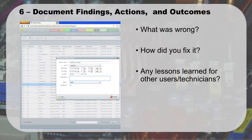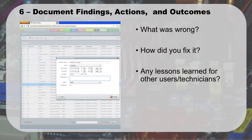The sixth and last step — and probably one of the most important, even though most people skip it — is to document your findings, actions, and outcomes. Record what was wrong with the computer, how you fixed it, and any lessons learned. This is most important because in a corporate environment, you may see the same issues repeatedly. If Sarah's computer and then Joe's computer both go offline with bad IP addresses, it may be systemic of a larger problem — like a switch starting to fail or cabling going bad.